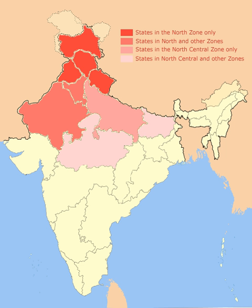Dudhwa National Park covers an area of 500 square kilometres along the Indo-Nepal border in Lakhimpur Kheri district of Uttar Pradesh, and is best known for the Barasingha or Swamp Deer. The grasslands and woodlands consist mainly of sal forests. The Barasingha is found in the southwest and southeast regions of the park. Among the big cats, tigers abound at Dudhwa, and there are also a few leopards.